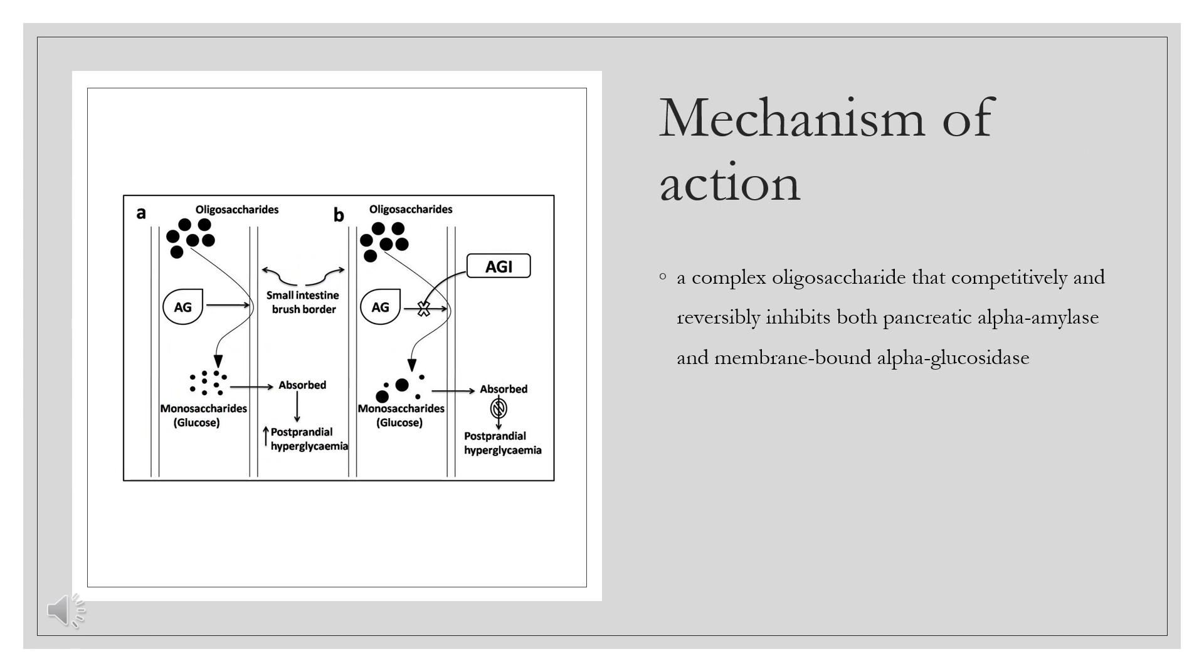Mechanism of Action. Alpha-glucosidase enzymes are located in the brush border of the intestinal mucosa and serve to metabolize oligo-, tri-, and disaccharides, e.g. sucrose, into smaller monosaccharides, e.g. glucose, fructose, which are more readily absorbed. These work in conjunction with pancreatic alpha-amylase, an enzyme found in the intestinal lumen that hydrolyzes complex starches to oligosaccharides.